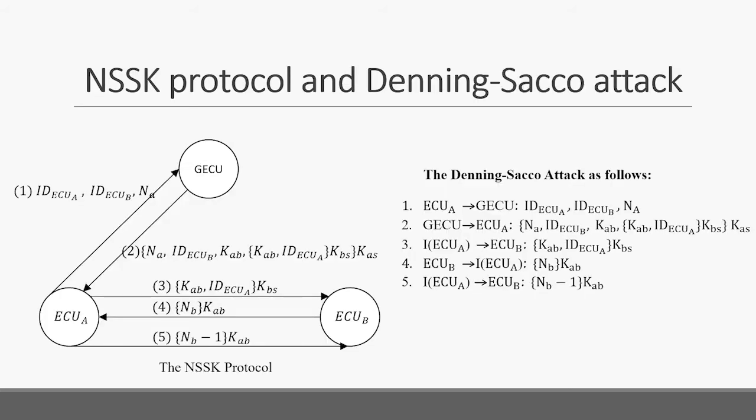The process of the classic NSSK protocol is on the left. It has a defect that may suffer the Denning-Sacco replay attack when someone impersonates the identity of sender ECU A to replay messages in steps 3 to 5 with ECU B. Because ECU B cannot distinguish whether the message comes from the real ECU A or an attacker, it will confirm the false session key sent by the attacker and replace the true session key with ECU A.